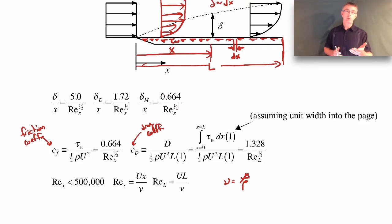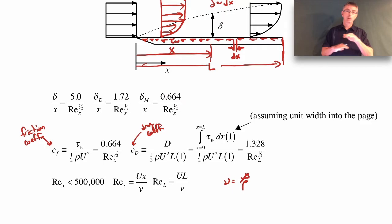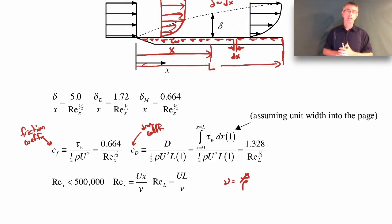Think back to the critical Reynolds number for flow through a circular pipe — Poiseuille flow. That was about 2,300, quite different from 500,000 for flow over a flat plate. For Couette flow between two parallel plates, the critical Reynolds number is about 1,600 based on the distance between the plates. They're all three different numbers because they're found experimentally and it's just different geometries.